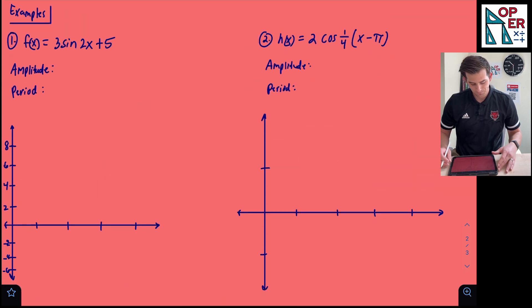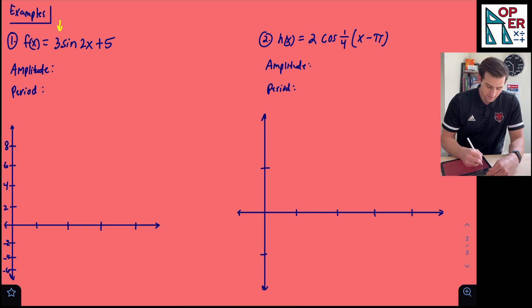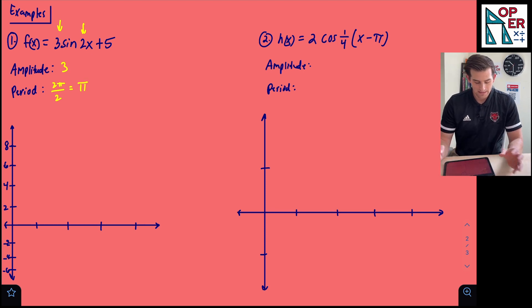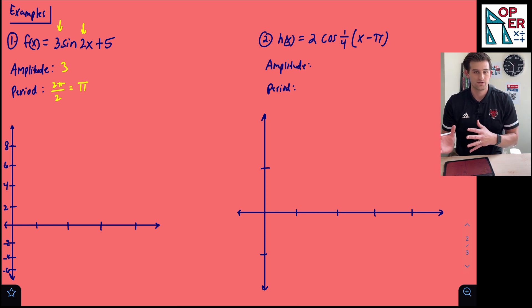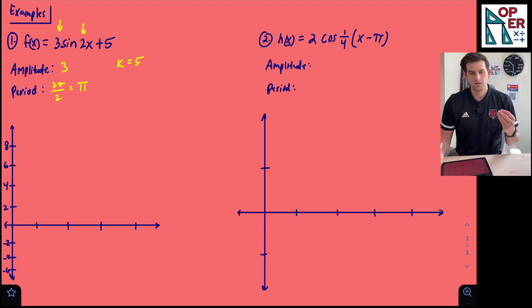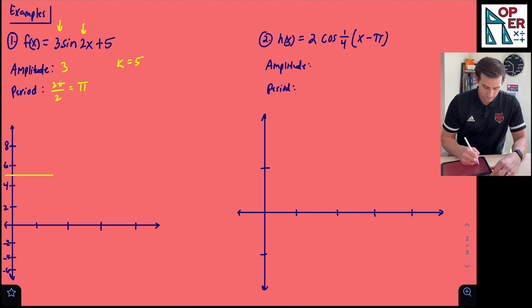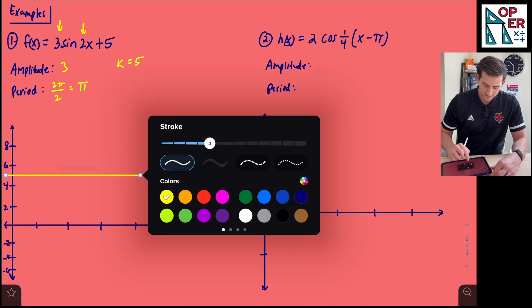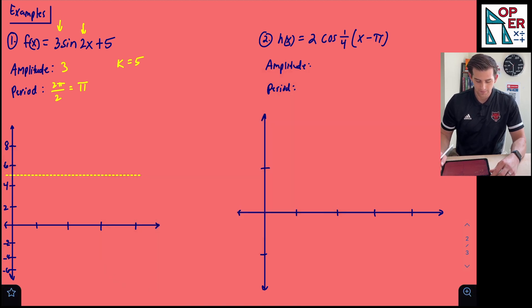Let's start with number one: f of x equals three sine two x plus five. Our amplitude is a, so amplitude equals three. The period is two pi over b — here b is two, so the period is pi. Notice there are no parentheses around x, so we do not have an h value, meaning no horizontal shifting. But k equals five, so we have a vertical translation five units up. I'll go ahead and draw the midline — right between four and six would be five — as a dashed line.